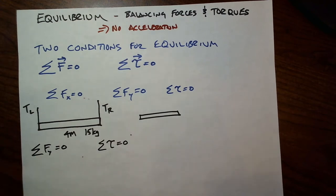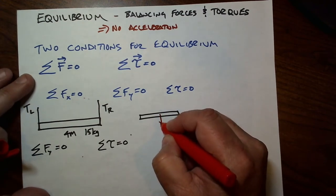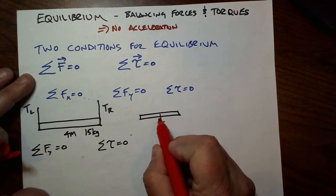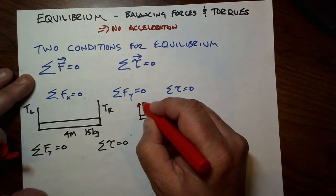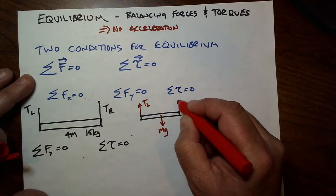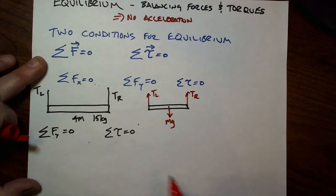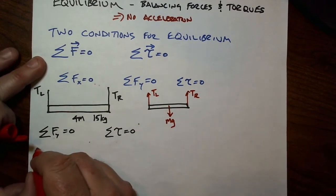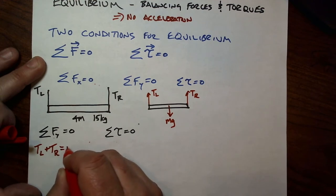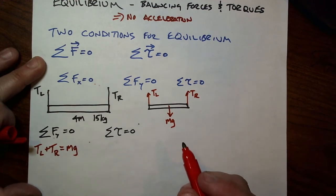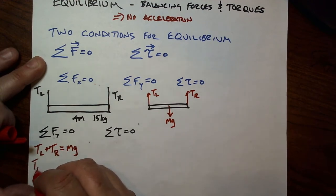So there's the plank. The plank has weight, M times G, and that's acting at its center. Its center of mass is halfway. Then there's the tension in the left and the tension in the right. So if I want to solve for the forces here, it's pretty clear that the sum of the tension on the left and the tension on the right must be equal to the weight of the plank.